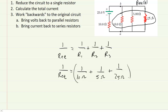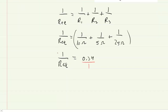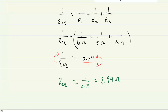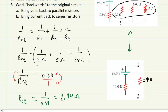Pick up your calculator and add those three fractions together. You will get 0.34. Putting 0.34 over 1 and solving for REQ, you reciprocate both sides of the equation. Flipping the left side gives REQ, and flipping the right side gives 1 divided by 0.34, which is approximately 2.94 ohms. We redraw the circuit and combine those three parallel resistors into a single equivalent resistor of 2.94 ohms.